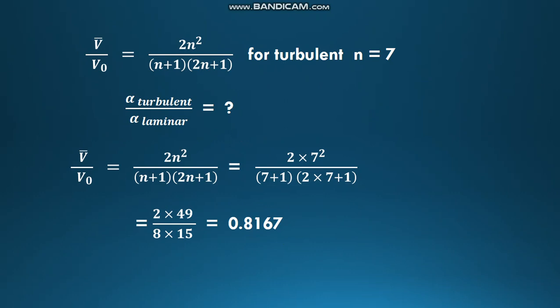V̄/V₀ is also given by the equation 2n²/[(n+1)(2n+1)] for turbulent flow. For n equal to 7, we substitute n = 7 in this equation and calculate V̄/V₀ = 2×7²/[(7+1)(2×7+1)].